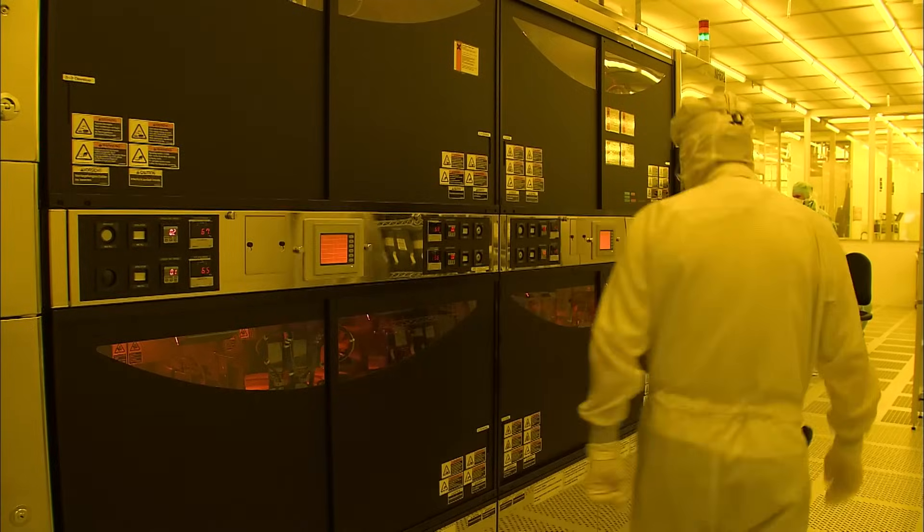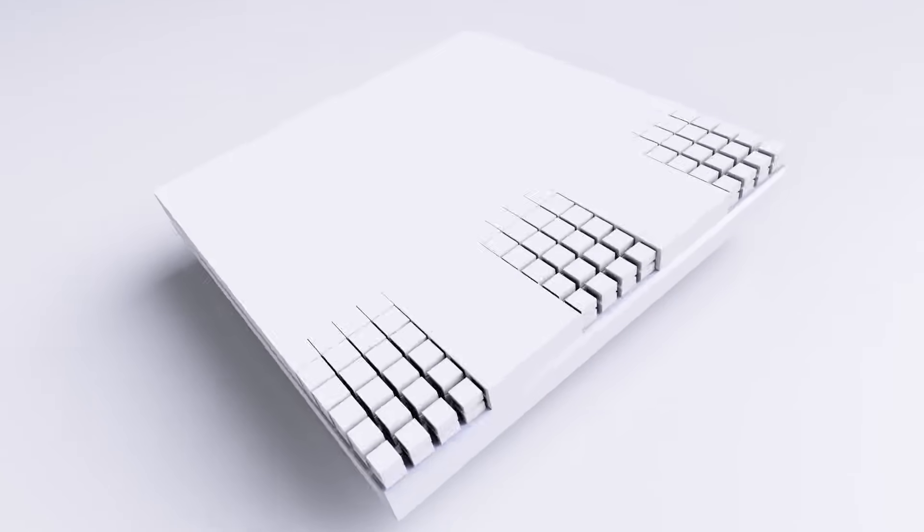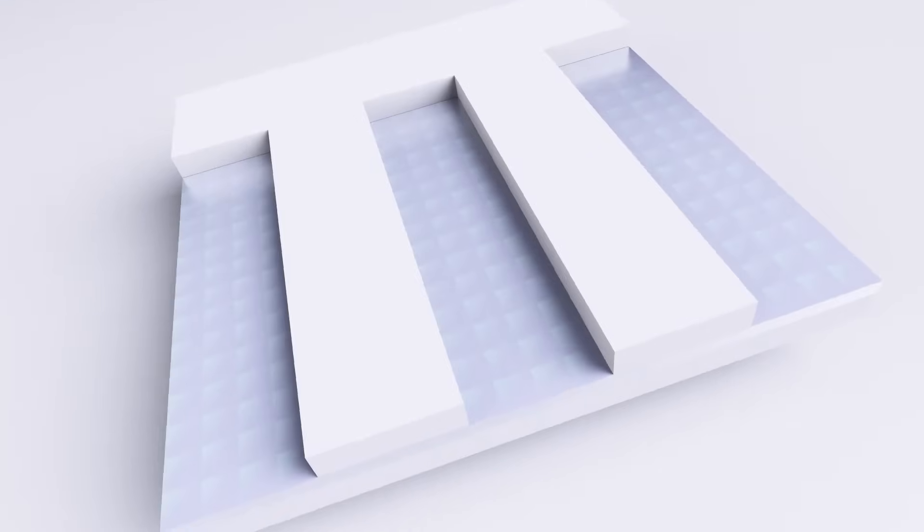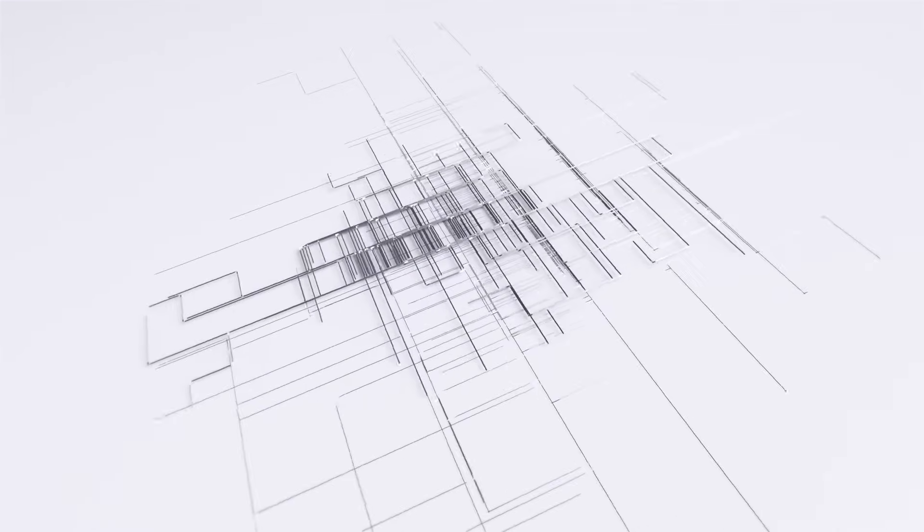After coating with a photoresist layer, the wafer surface is exposed, developed, and etched. This results in the desired conductor structure. Such structures are hundreds of times finer than a human hair.